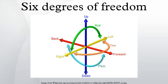Six degrees of freedom refers to the freedom of movement of a rigid body in three-dimensional space. Specifically, the body is free to move forward-backward, up-down, left-right, combined with rotation about three perpendicular axes, often termed pitch, yaw, and roll.